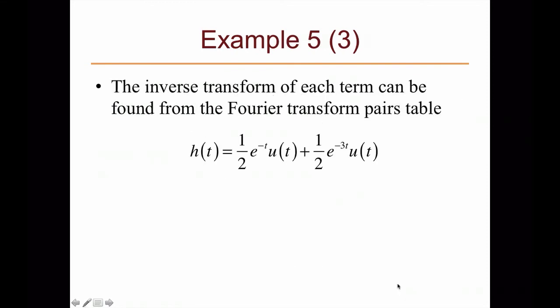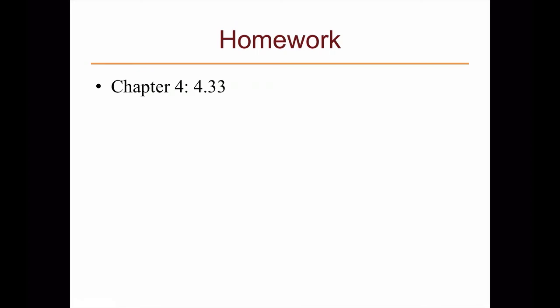Mapping these terms using the Fourier transform table and inverse transforming gives the impulse response: h(t) = (1/2)e^{-t}u(t) + (1/2)e^{-3t}u(t). This is the end of the Fourier transform lecture on the system part. You can apply the same technique to the discrete-time Fourier transform; although the synthesis equation differs and the frequency is periodic, all concepts are similar since both are Fourier transform techniques.